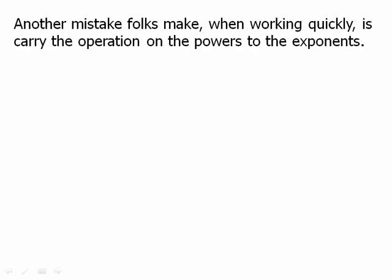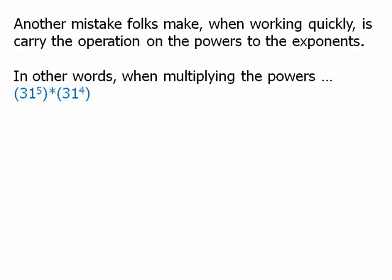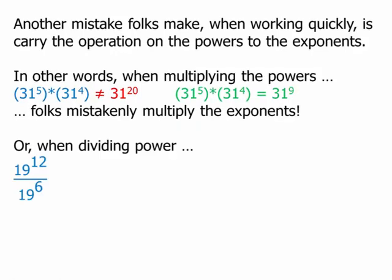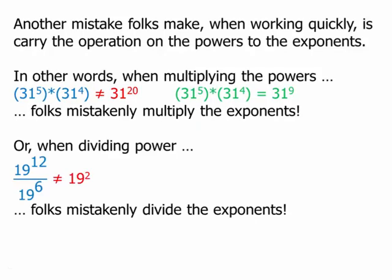Another mistake people make when working quickly is to carry the operation on the powers to the exponent itself. When they're multiplying the powers, people make the mistake of multiplying the exponents — that is a very common mistake. Of course, the correct thing to do is add the exponents. Or when people are dividing powers, they mistakenly divide the exponents, when again the correct thing to do is subtract the exponents.